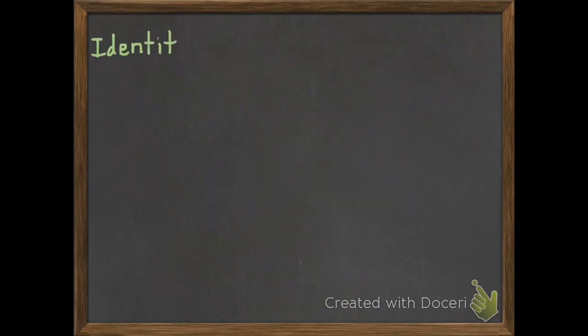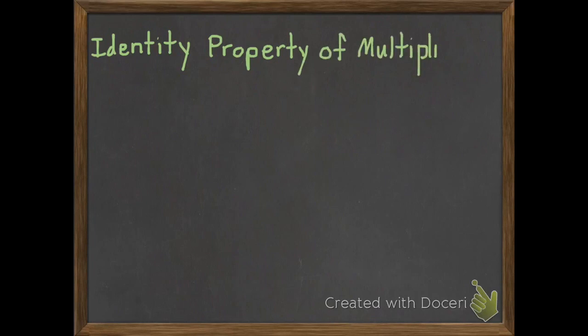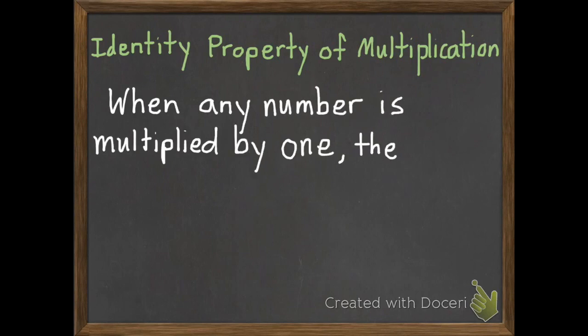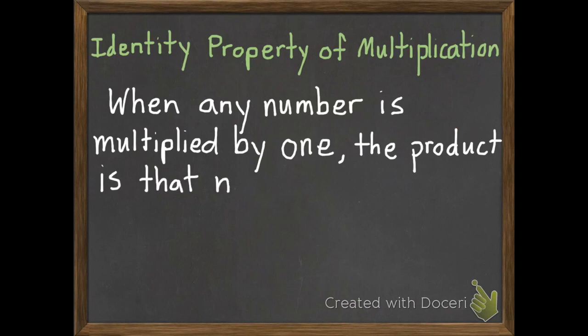Next, we have the identity property of multiplication. The identity property of multiplication says when any number is multiplied by 1, the product is that number.